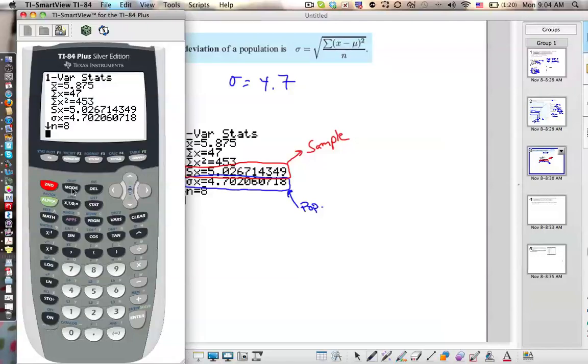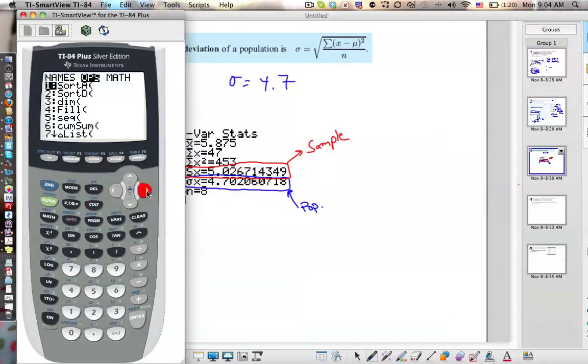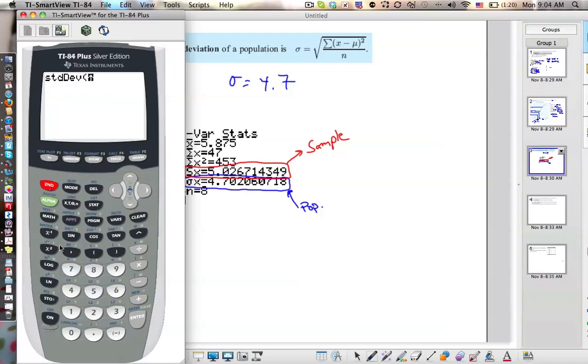Okay, and another thing you might find on your own is if you go to 2nd, stat, go over to math, and you see standard deviation there, number 7 of L1, 5.02. You cannot use this one. It's wrong.